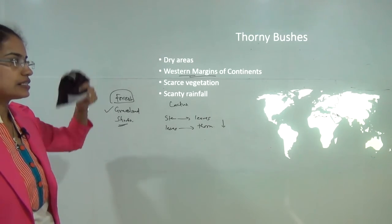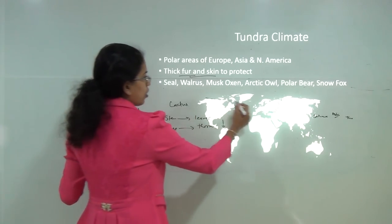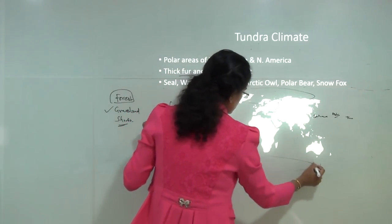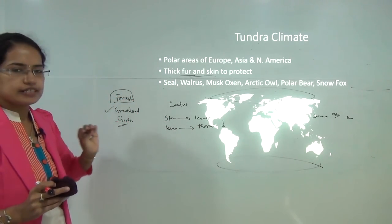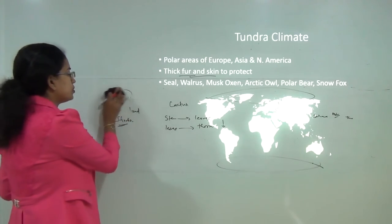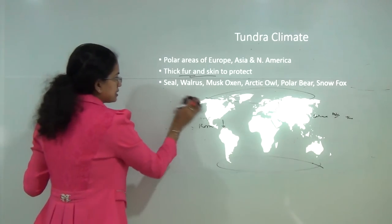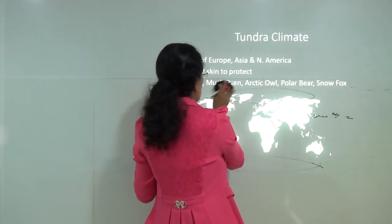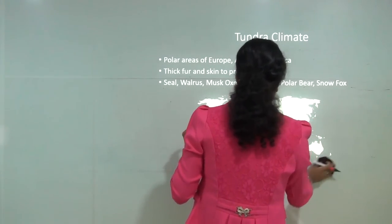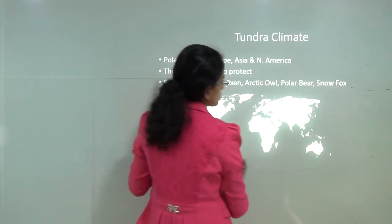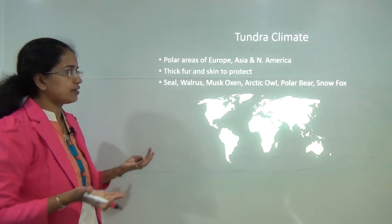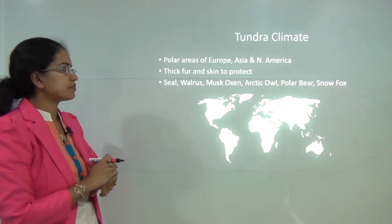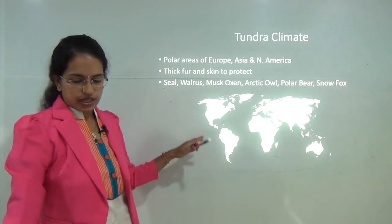In the extreme areas — the tundra regions, north polar regions and Antarctica — very few trees are seen. Most vegetation is in the form of mosses, lichens or rhododendrons. Common animals here include arctic owl, polar bear, snow leopard, snow fox, seals, walrus and penguins. The animals have thick fur and skin to protect them from the cold temperature. This is what is the tundra climate. With this we have covered Chapter 6 of Class 7.